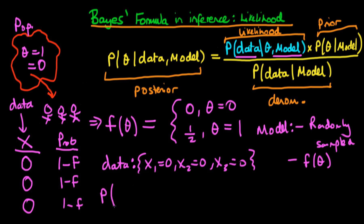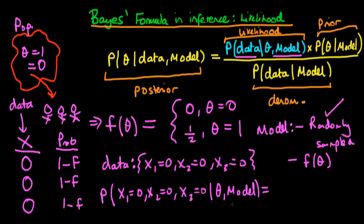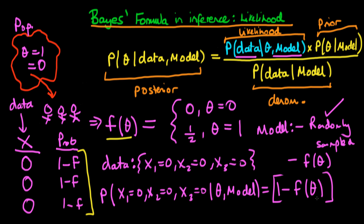We can write the probability of our data — x1 equals zero, x2 equals zero, x3 equals zero — given a particular value of theta and our model choice. Since we assume random sampling, we multiply the individual probabilities together. Each individual probability is one minus F, so the overall probability is (1 minus F(theta)) times (1 minus F(theta)) times (1 minus F(theta)), which equals (1 minus F(theta)) to the power of 3.